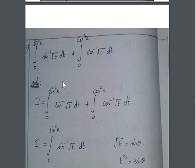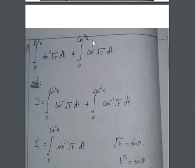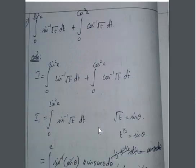Question 9.3, seventh subdivision: evaluate the integral from 0 to sin²x of sin⁻¹(√t) dt plus the integral from 0 to cos²x of cos⁻¹(√t) dt. Let us name the whole expression as I. Since there are two integrations, I name them as I1 and I2.